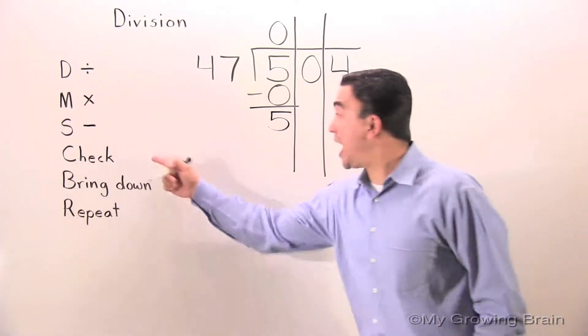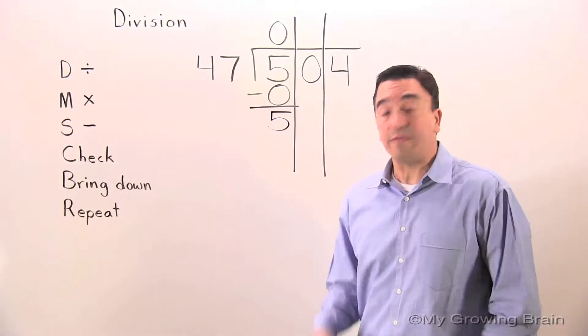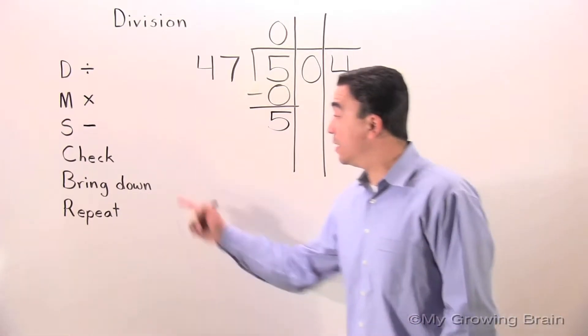Next step, check. 5 is less than 47. Keep on going. Next step, bring down.